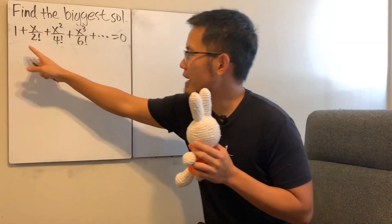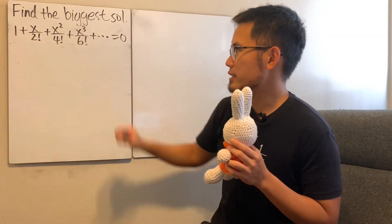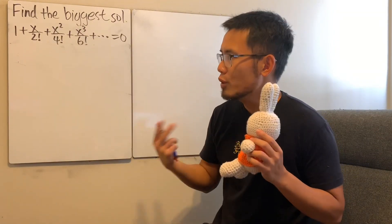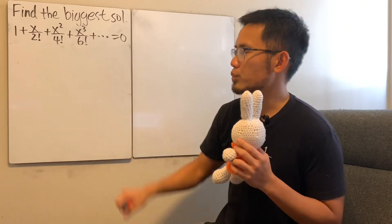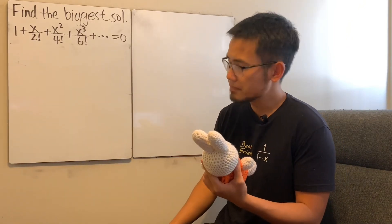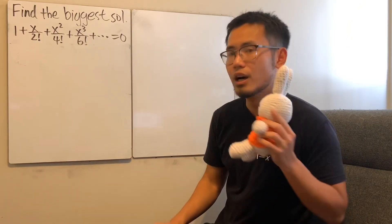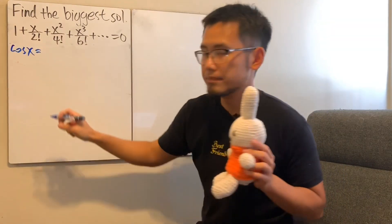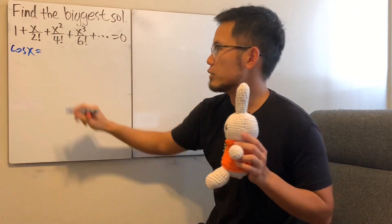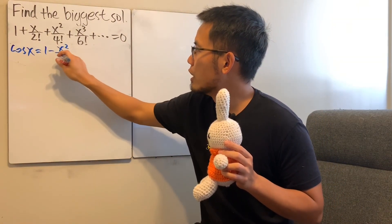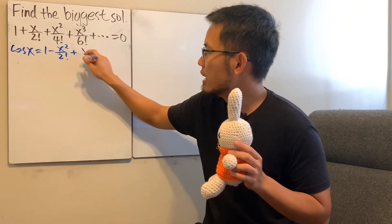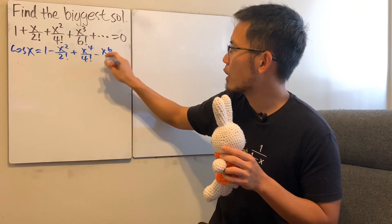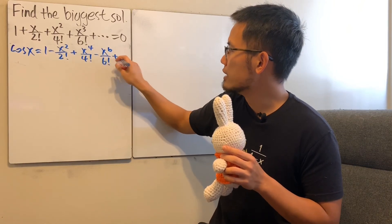Ideally speaking, if we can find the function that this power series is representing, then we can just solve the equation regularly. So do we know a function that has this power series? Cosine x! Let me write down the cosine x power series centered at zero: it is 1 minus x squared over 2 factorial, plus x to the 4th power over 4 factorial, minus x to the 6th power over 6 factorial, and so on.